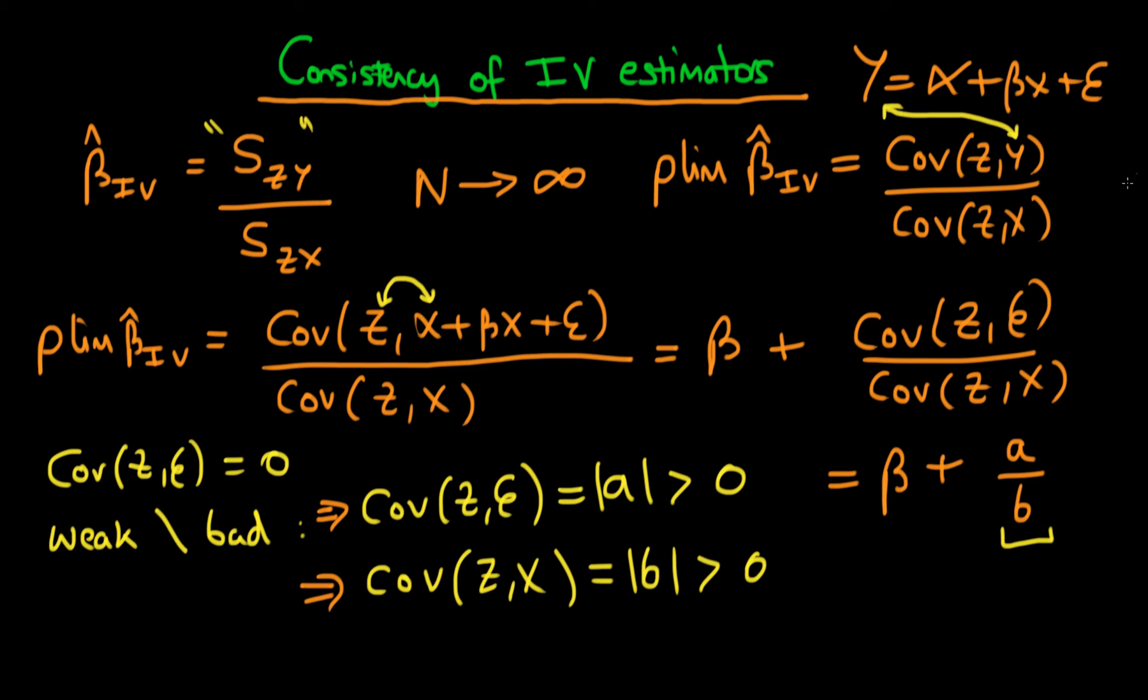So in those circumstances, you can see that the probability limit of beta hat IV very much does not equal beta, the true population parameter. In the next video, we are going to compare the asymptotic biasness of IV estimators with that of least squares estimators. I'll see you then.